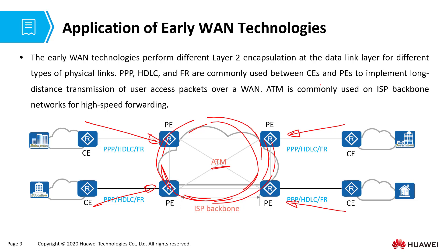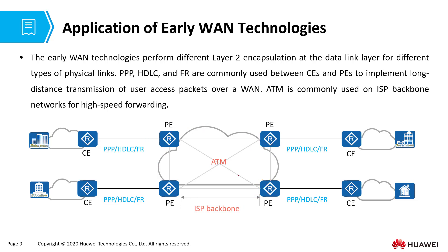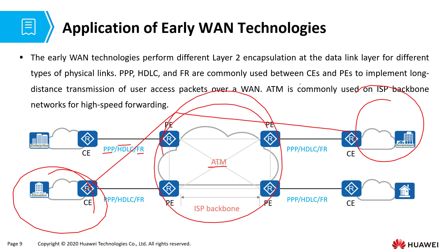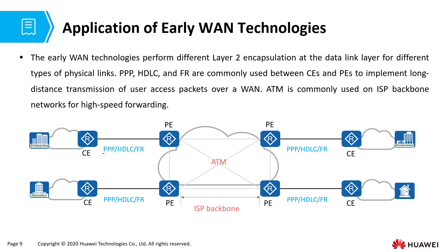That is the overview of early wide area network technologies: point-to-point protocol, high-level data link control, frame relay, and asynchronous transfer mode — the early WAN technologies used for connecting remote branches. One LAN wants to connect to another LAN; we either build our own dedicated WAN or use a provider's existing WAN. In the next video, I'll be talking about the implementation and basic configuration of point-to-point protocol. I hope this has been informative for you, and I thank you for viewing.